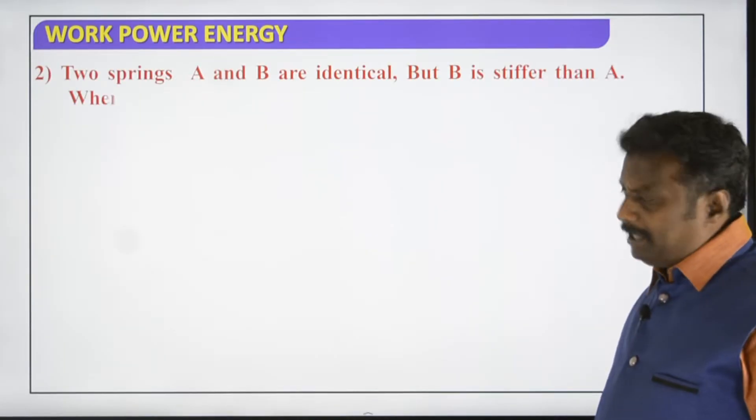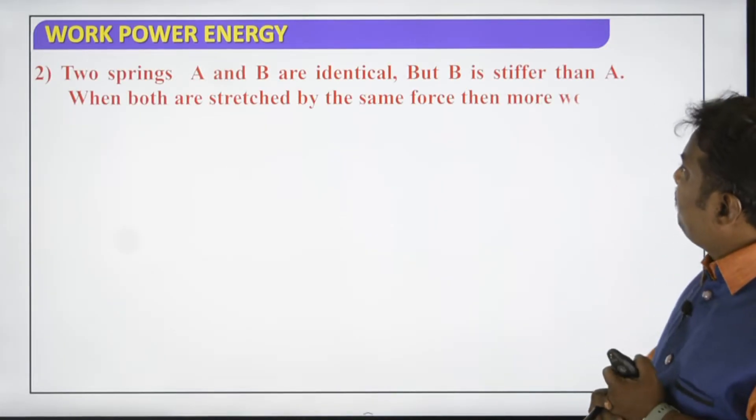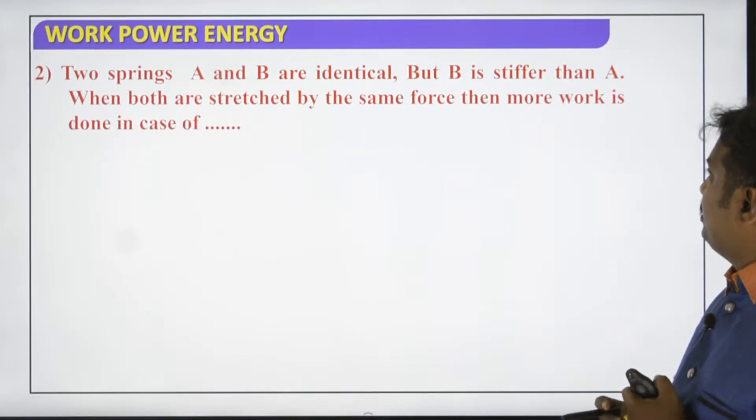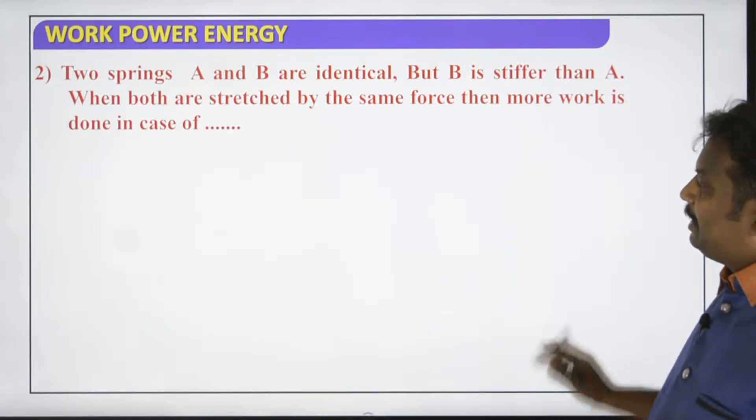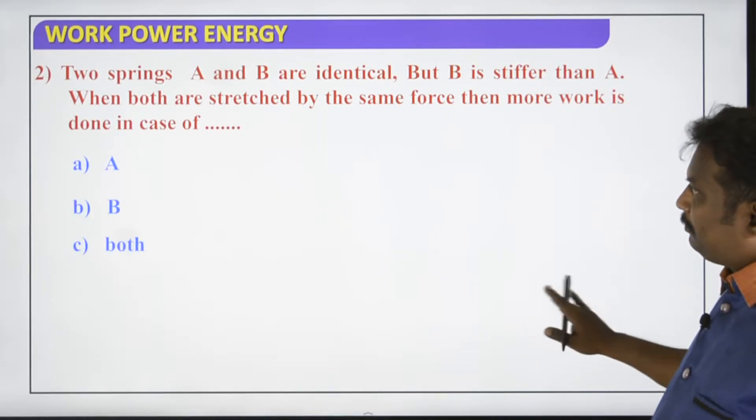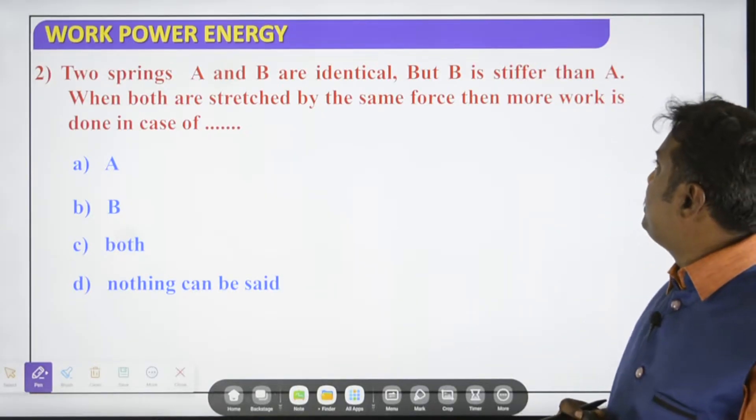Two springs A and B are identical. B is stiffer than A. Both are stretched by the same force. Then more work is done in case of A or B.